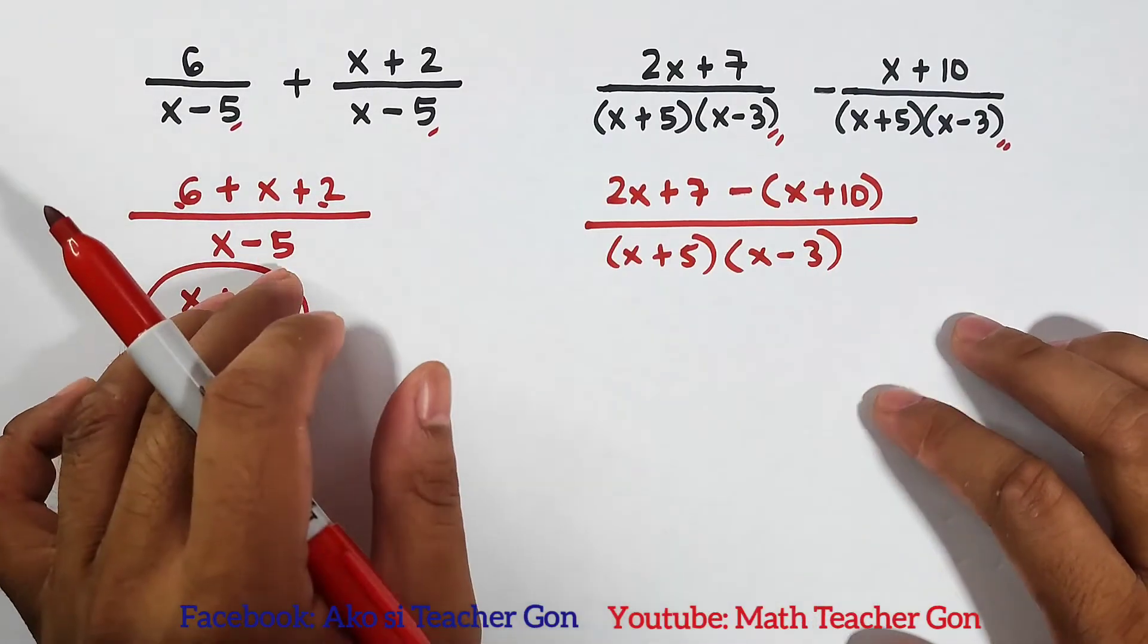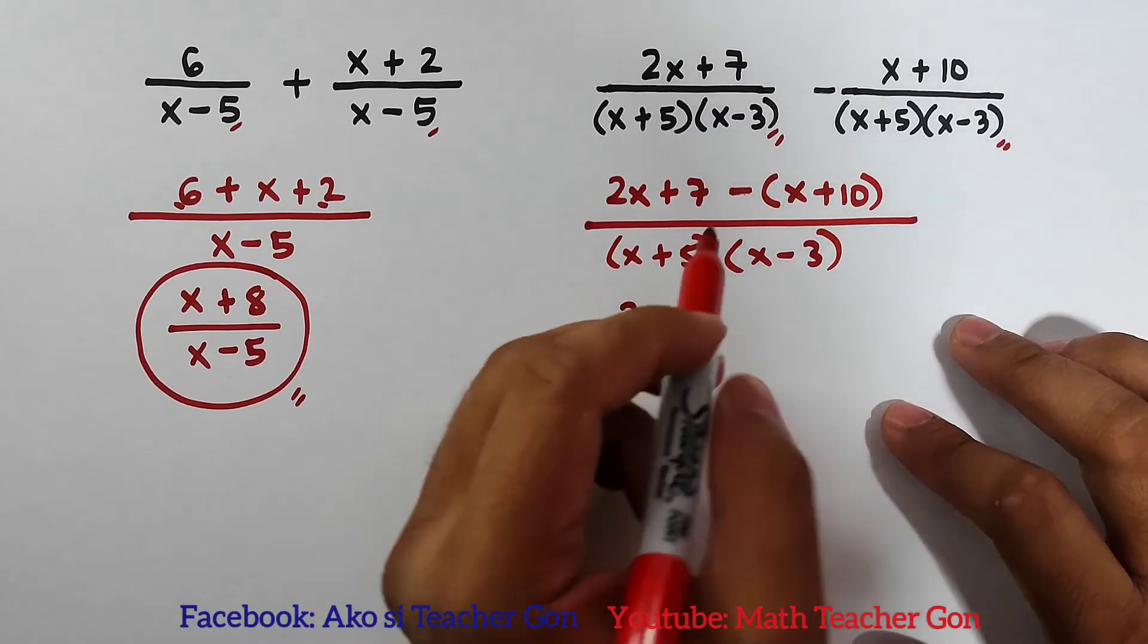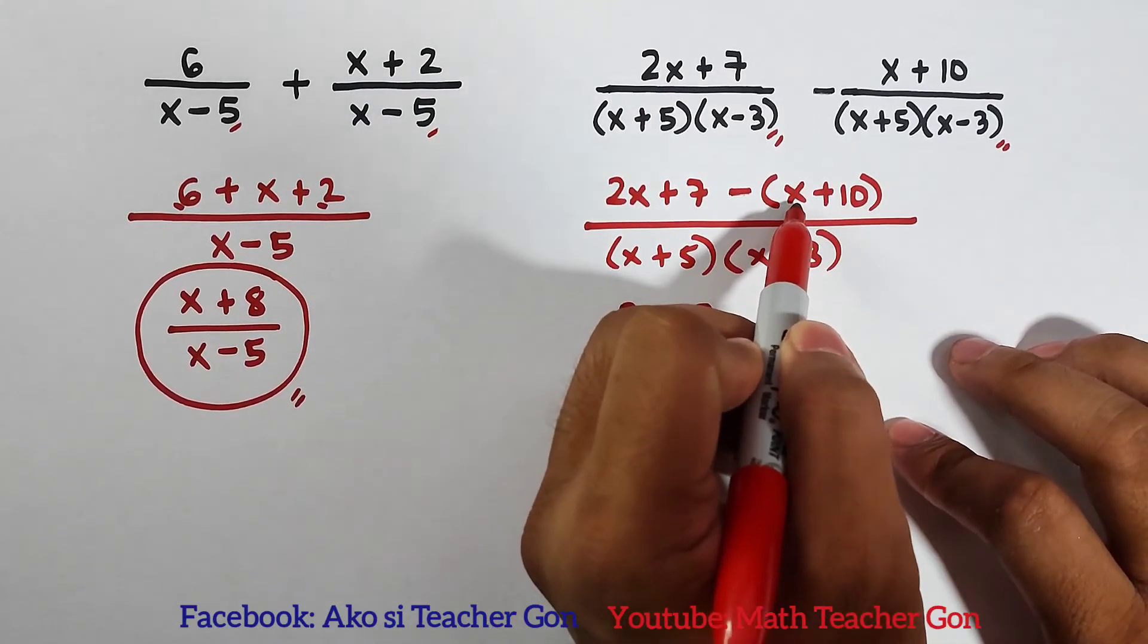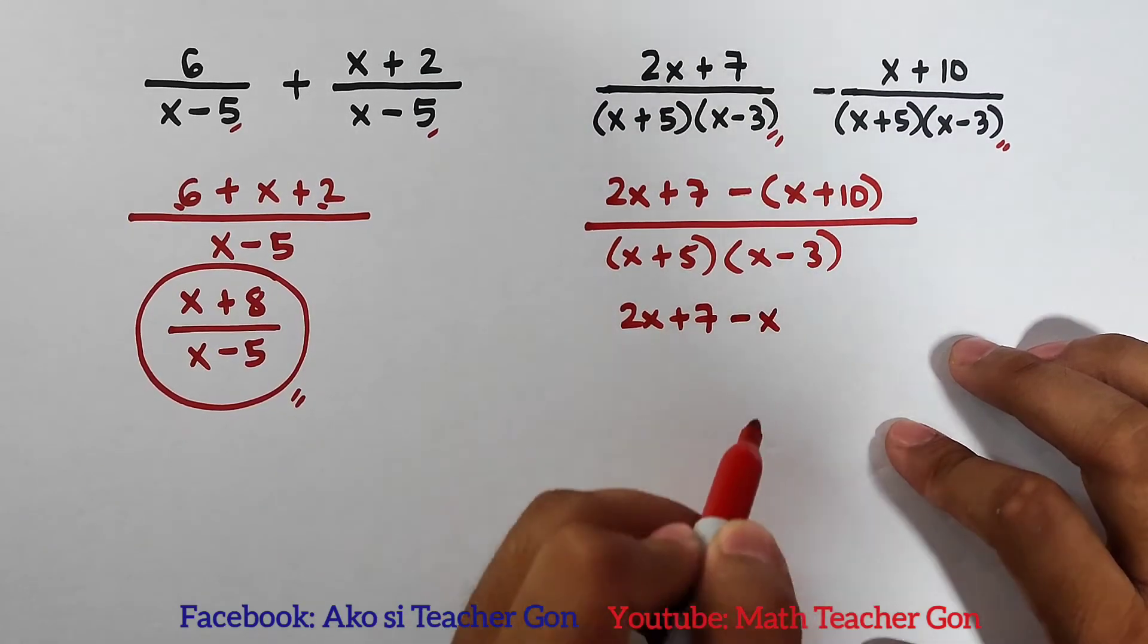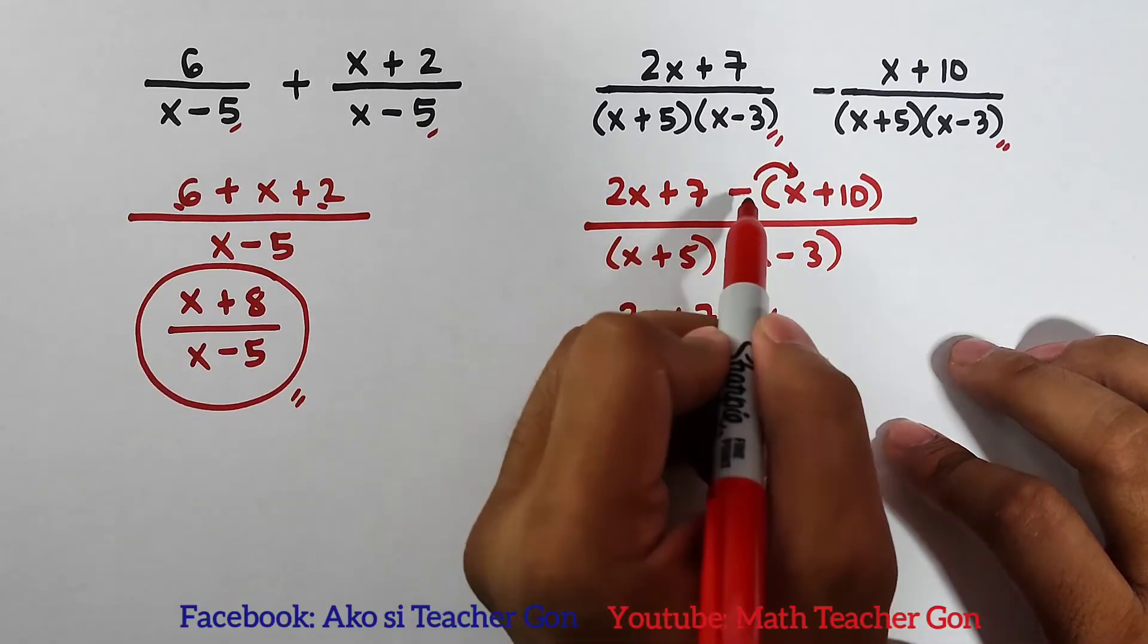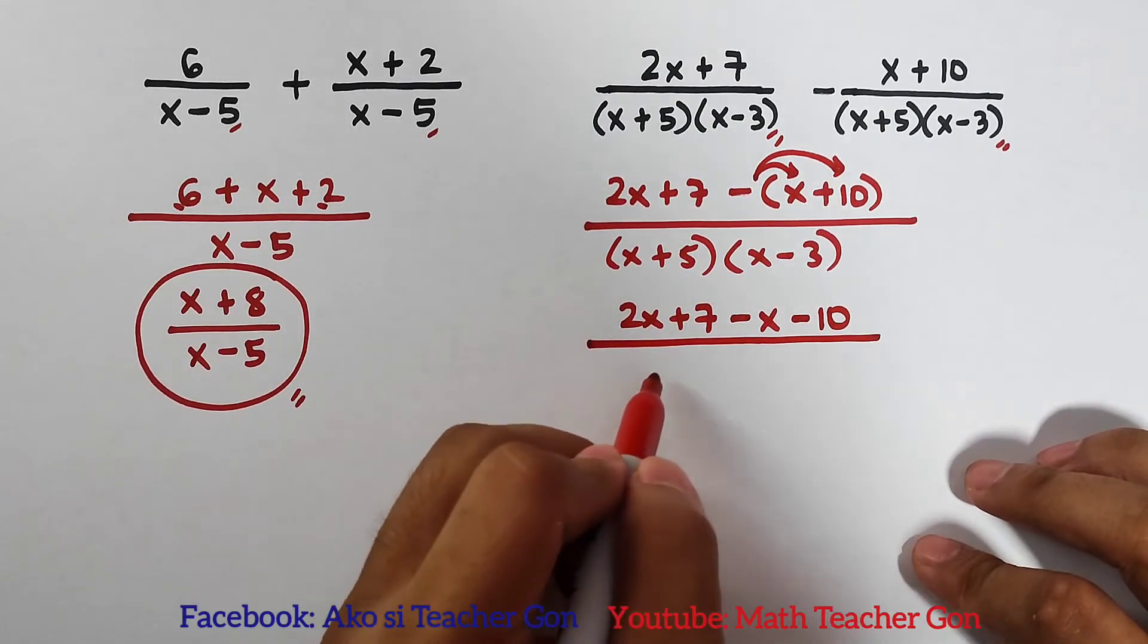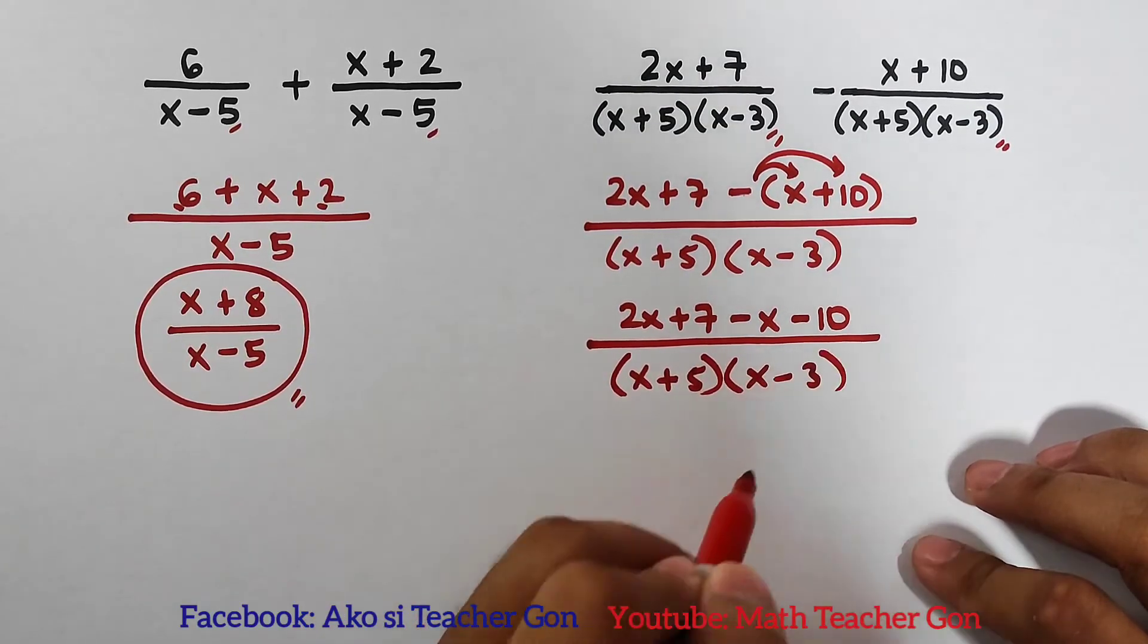So here, this one is quite different from the first example. Copy this first: 2x plus 7. What will happen here is that we will distribute or multiply this negative sign to the terms inside the parenthesis. Your x is positive, negative times positive x is simply minus x. Then here, negative, we distribute it now. Negative times positive 10, that would be negative 10 or minus 10. Then copy your common denominator (x plus 5)(x minus 3).